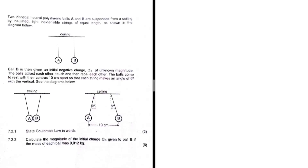This is a special question. Let's go through the problem statement: two identical neutral balls A and B are suspended from the ceiling by insulated light inextensible strings of equal length, as shown in the diagram.